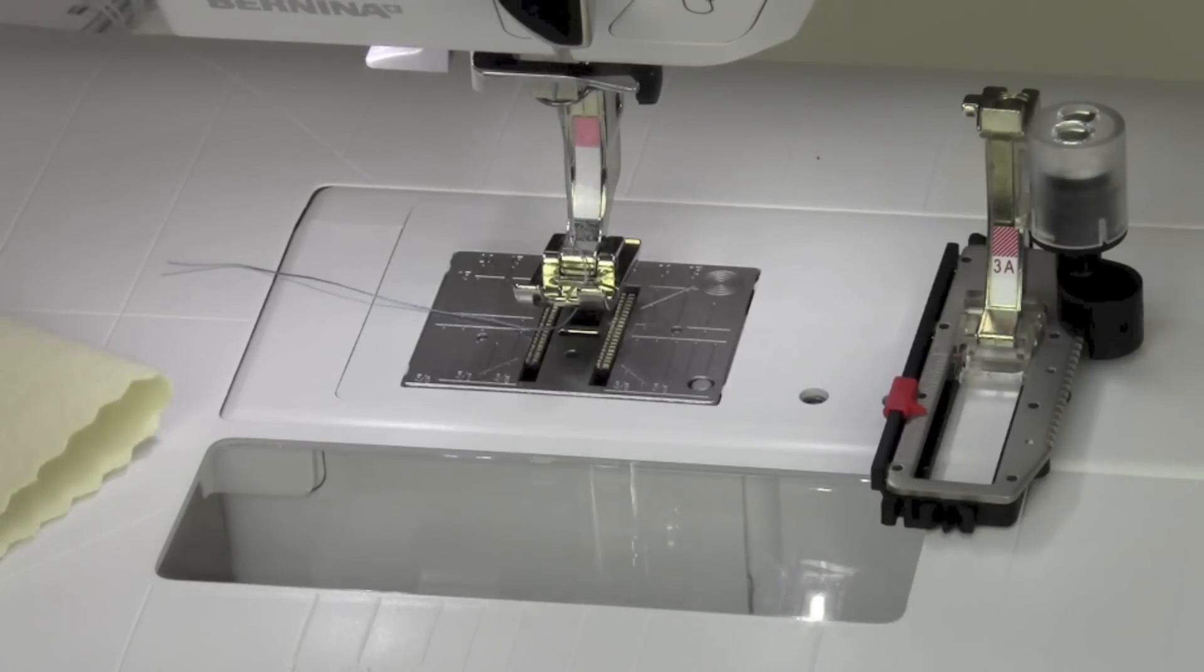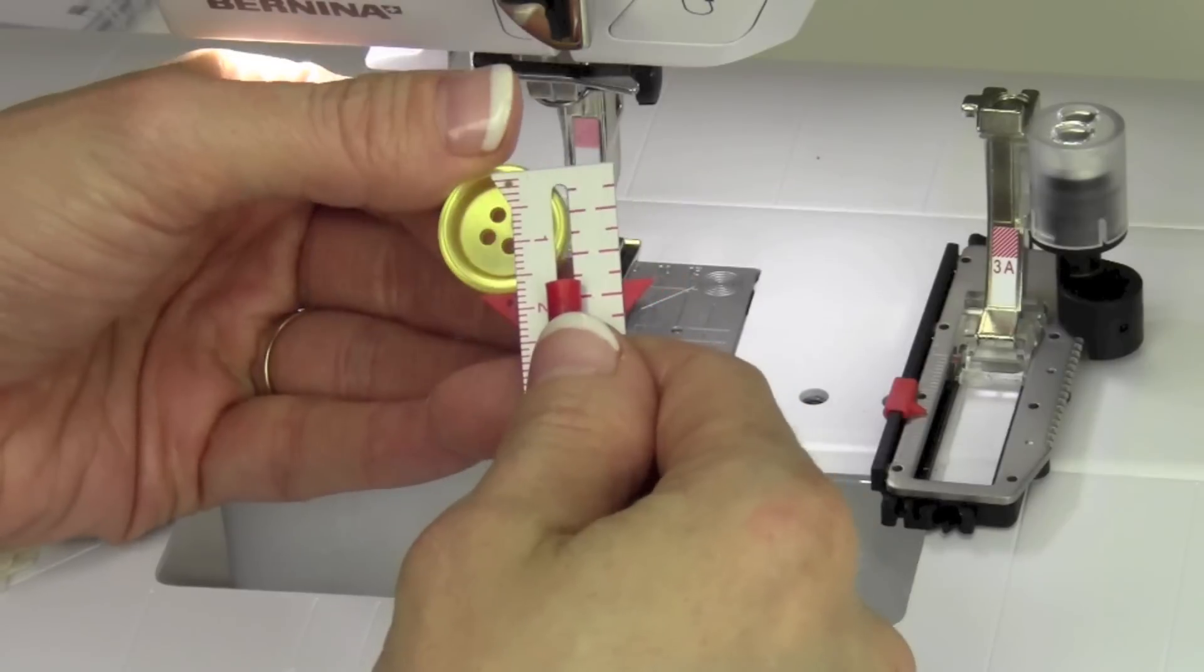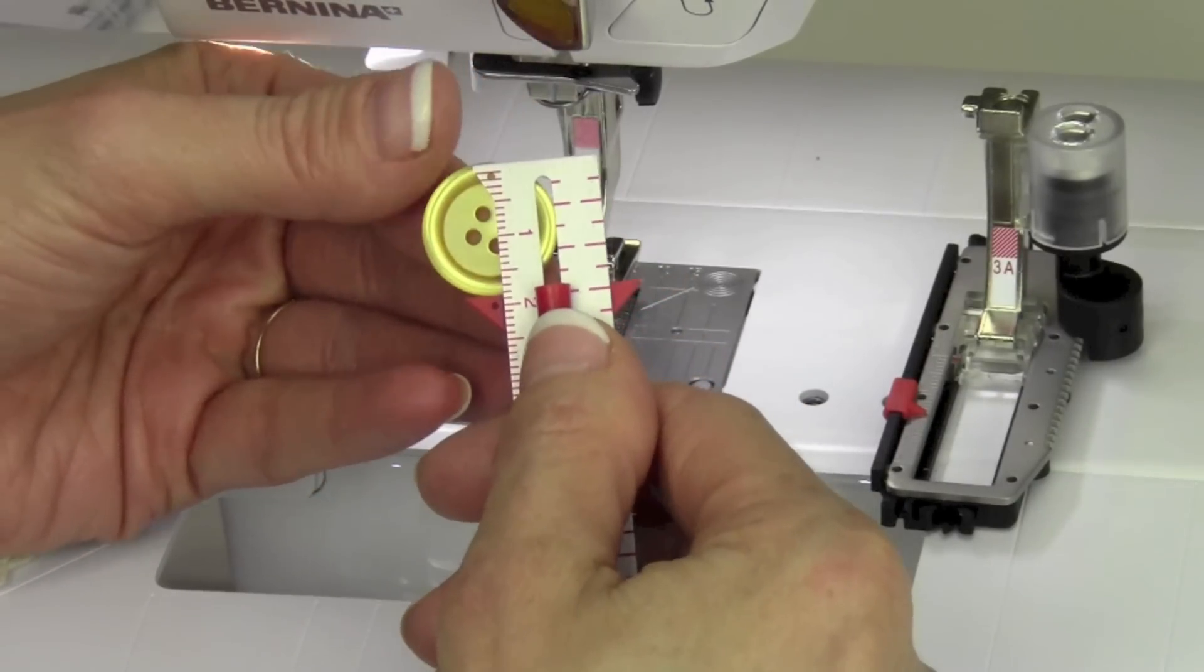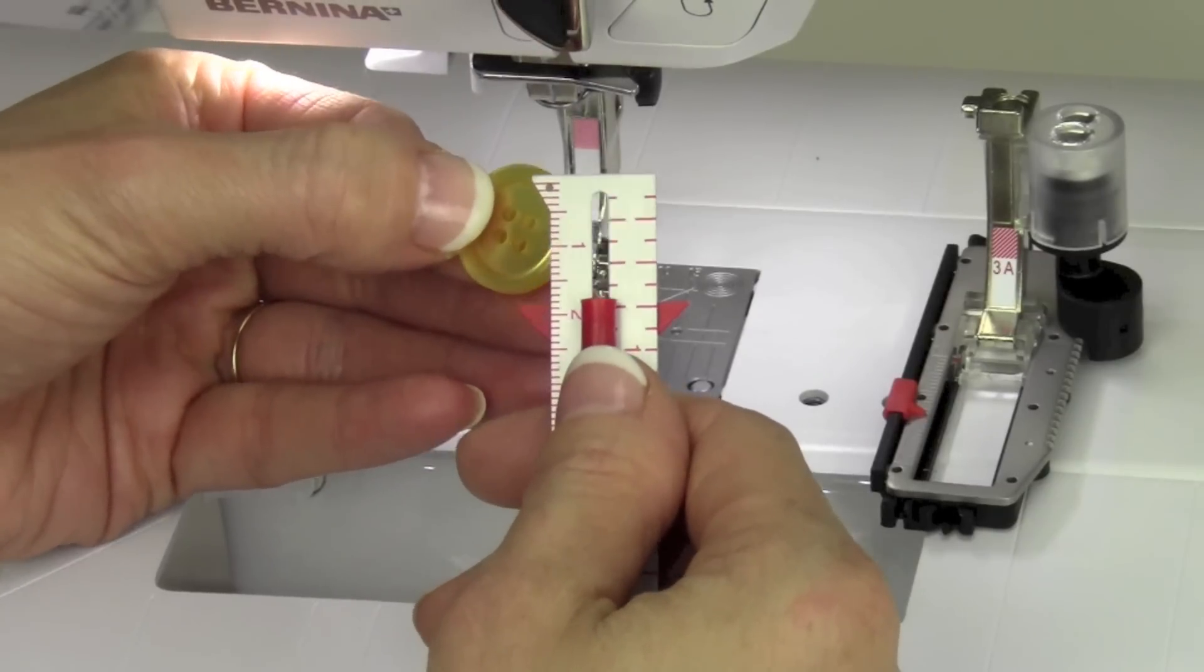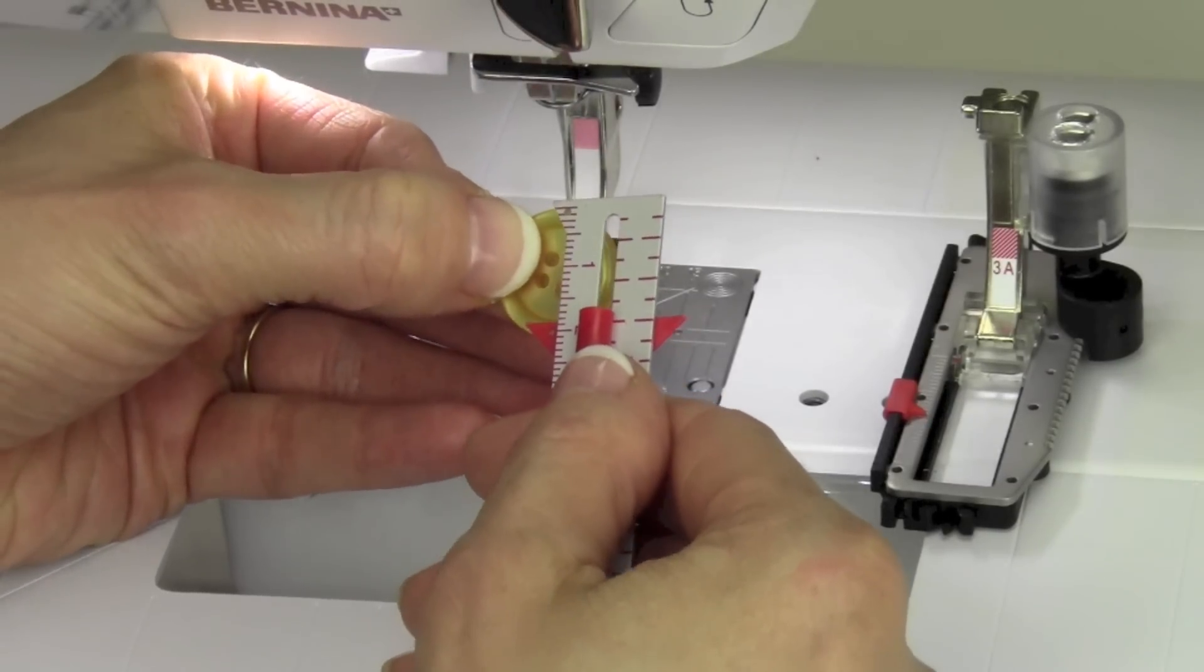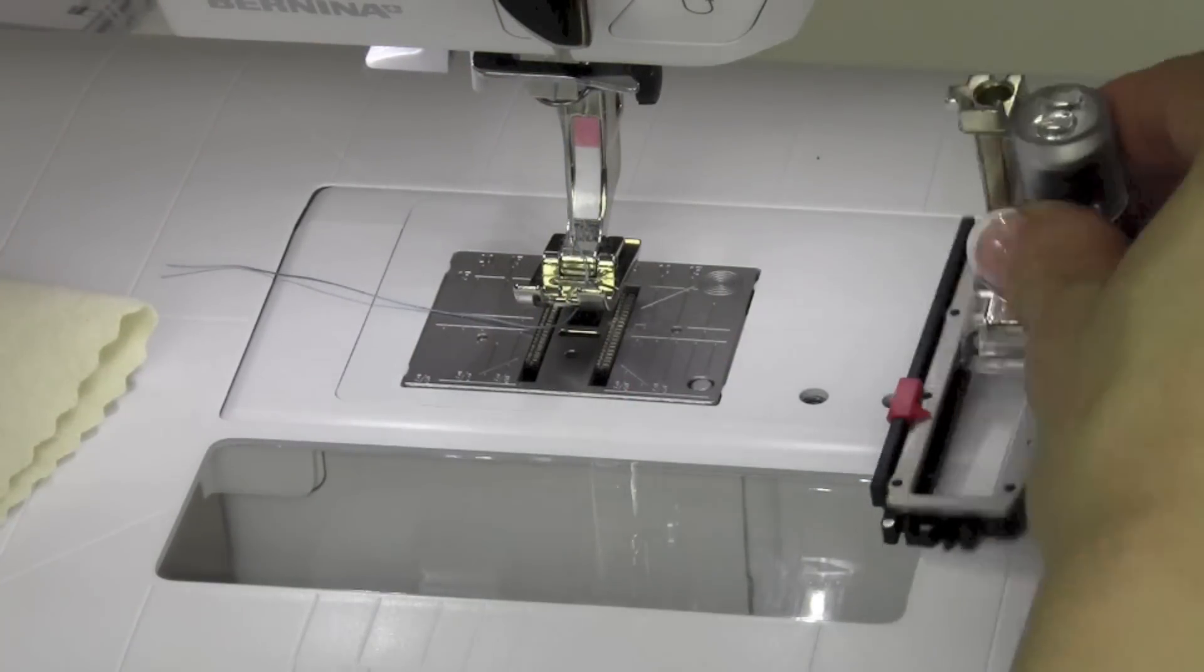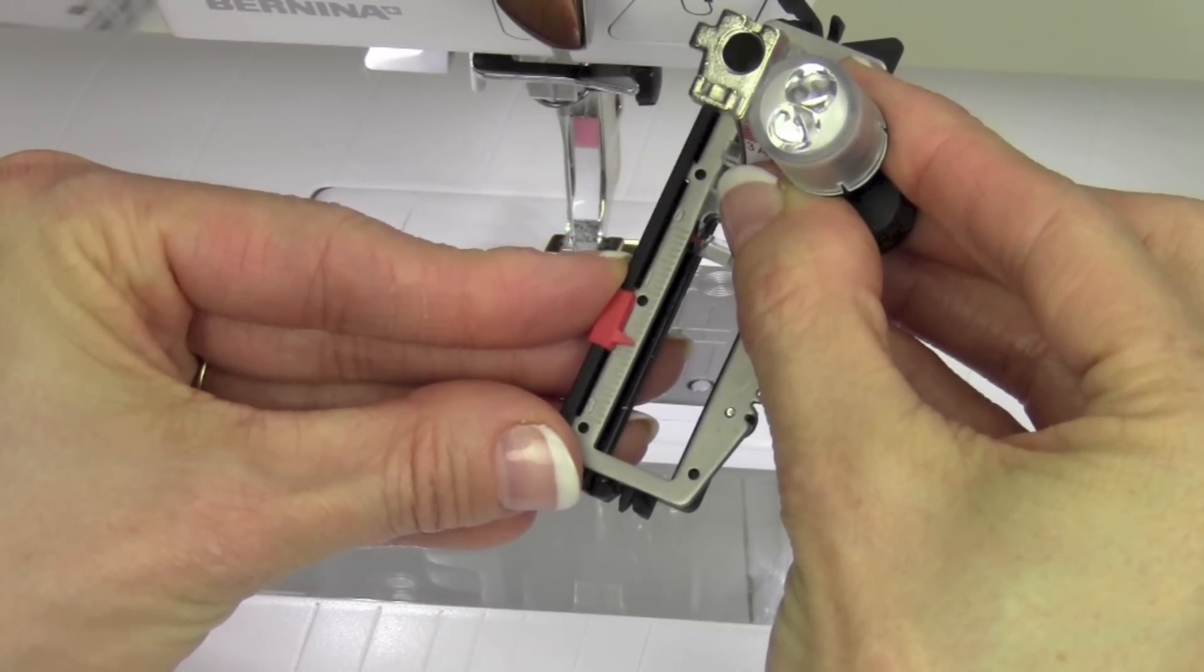We're going to take a button and measure it to see what size we need. When you look at your button, if you measure it ahead of time, this has got about 17 millimeters long and then we do need to add two millimeters, one for each side to accommodate the height of the button. Then you're going to come over here. We can set this up for 17 plus 2, 19.